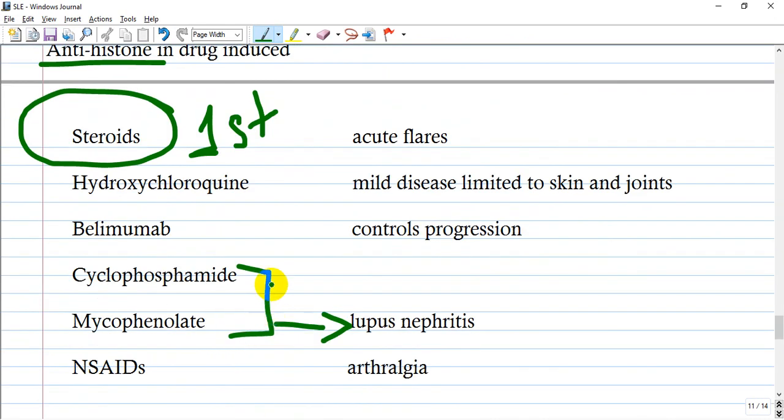What is the treatment? The first and best initial treatment is steroids. Steroids help in acute flares, help in the acute phase. But we also have other drugs like hydroxychloroquine for mild disease limited to skin and joints. We have a new drug, belimumab, a monoclonal antibody inhibitor that controls progression. We have cyclophosphamide and mycophenolate